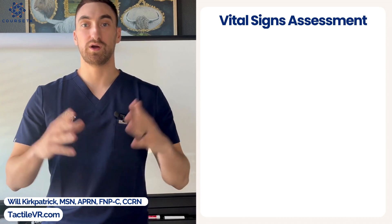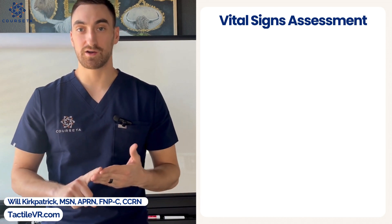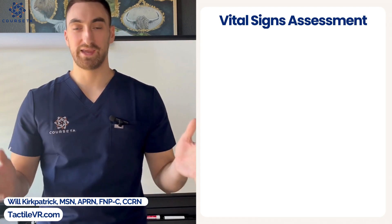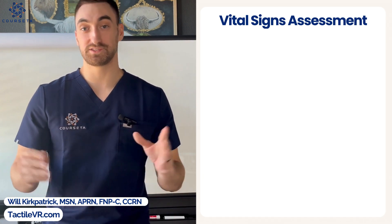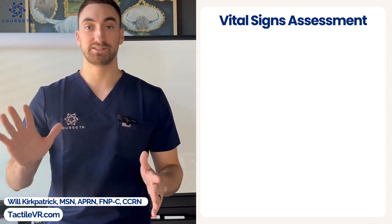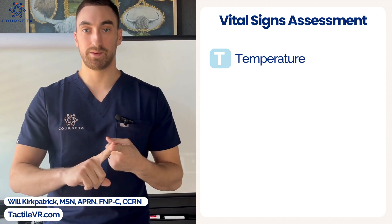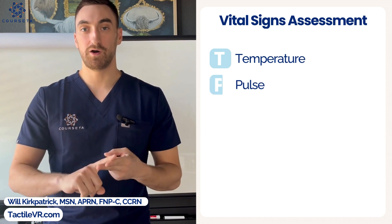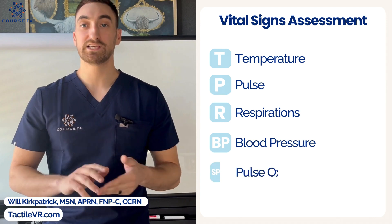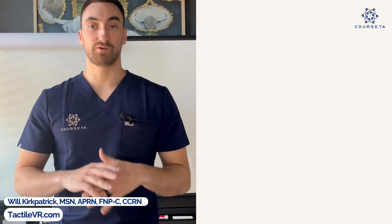First, we want to go over what is actually checked with vital signs. We have TPR, blood pressure, and SpO2, and then of course pain is now considered a vital sign — your sixth vital sign. All in all, we have five vital signs evaluated objectively. TPR stands for temperature, pulse, and respirations. BP is blood pressure, and SpO2 is your pulse oximetry.